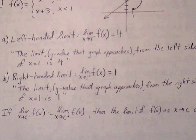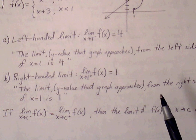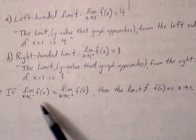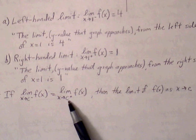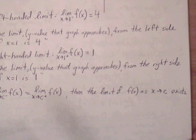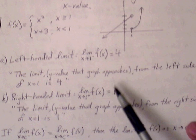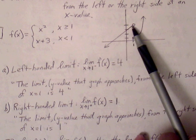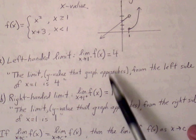Having information about one-sided limits gives us a more detailed way of describing whether a limit exists. If the one-sided limits agree — meaning the limit as x approaches c from the left equals the limit from the right — then the limit exists. In this case, the limit as x approaches 1 does not exist because the left-hand limit is 4 and the right-hand limit is 1.